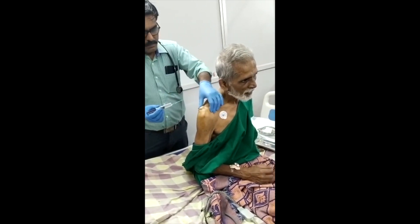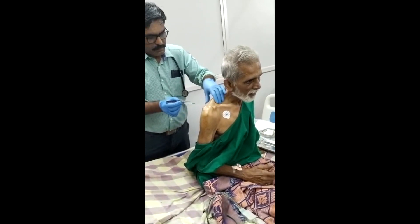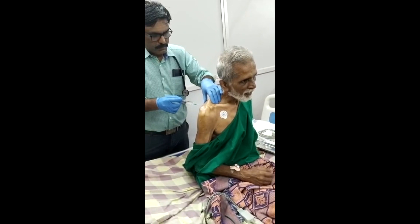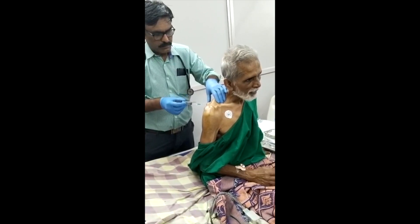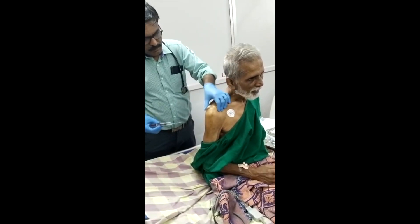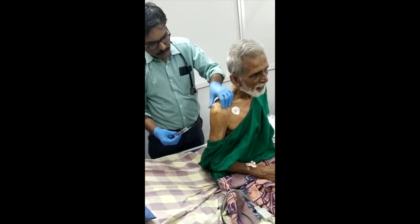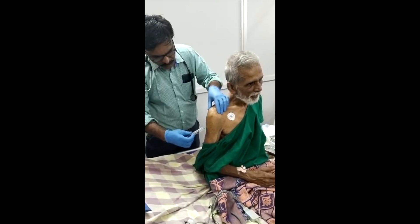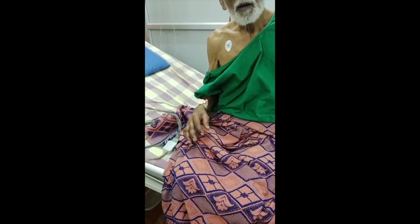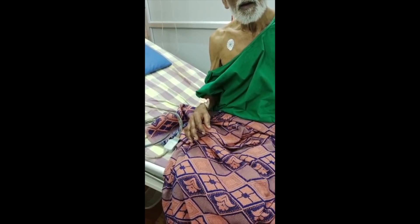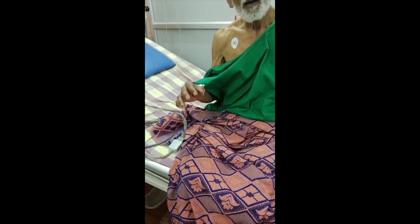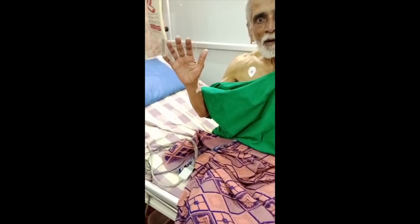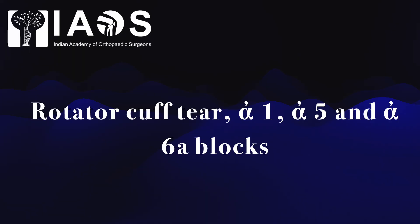You can see the tremors of the patient. The results are told by the doctor himself. The next few cases are rotator cuff tears treated by alpha-1,5 and alpha-6A blocks.